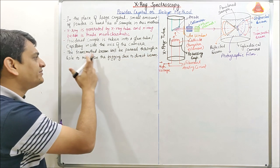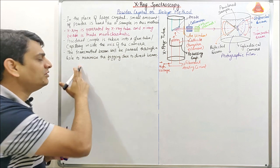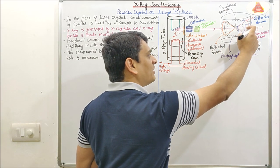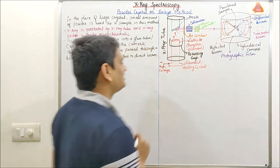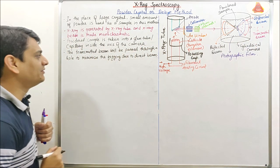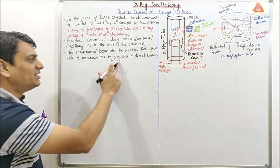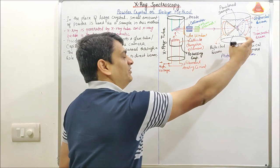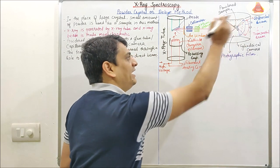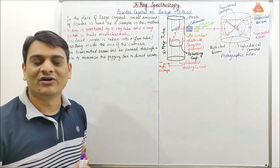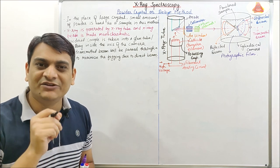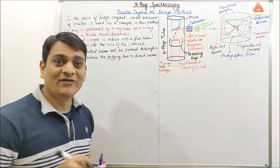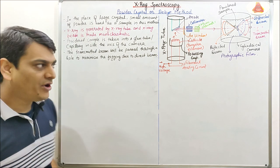The transmitted beam will be passed through a hole. This is the transmitted beam and it is passing through a hole which is present in the cylindrical camera to minimize the fogging due to the direct beam. If this transmitted beam were present inside, it may create fogging — meaning it may create some different patterns in this photographic film.